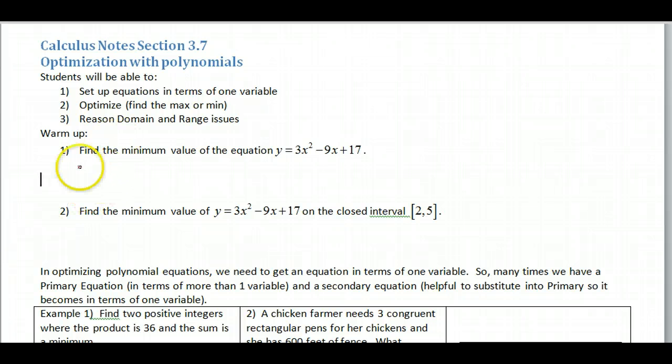But to start off with, we want to do a warm-up problem. So using your calculus, I'd like you to find the minimum value of the equation y equals 3x squared minus 9x plus 17. And then you can go ahead and do the minimum value for the same function on the closed interval. So go ahead and pause and try that and I'll show you the solution.